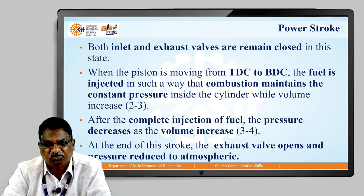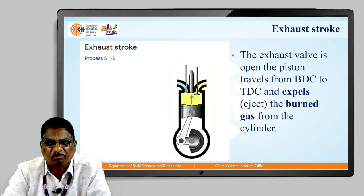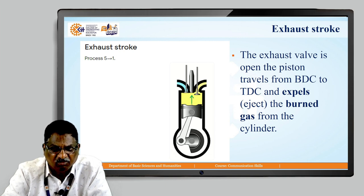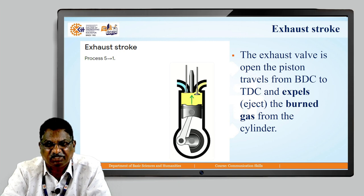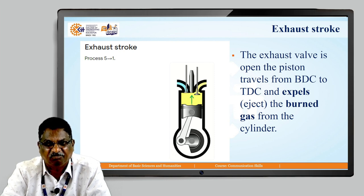At the end of this stroke, the exhaust valve opens and pressure is reduced to atmospheric. Then the last stroke, the exhaust stroke: the process is 5 to 1 on the PV diagram. The exhaust valve is open, the piston travels from BDC to TDC, and expels the burnt gases from the cylinder via the exhaust valve.